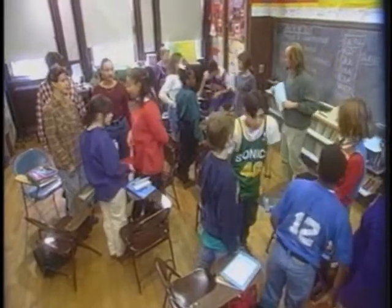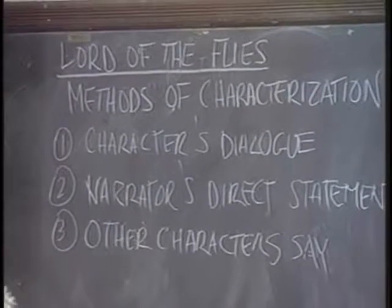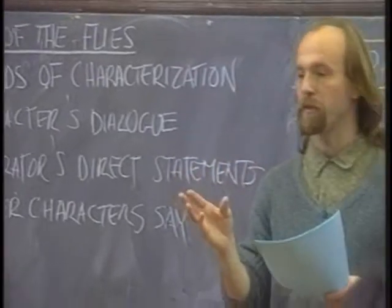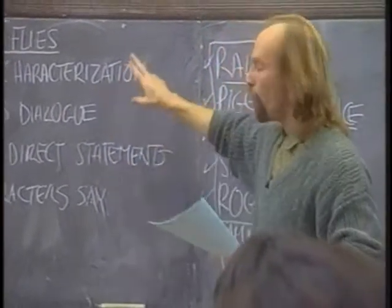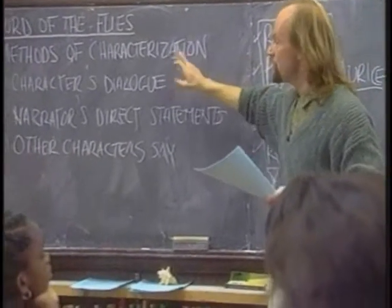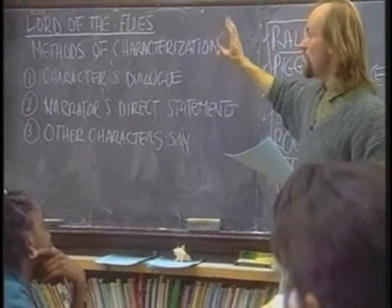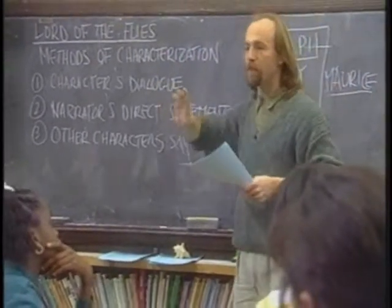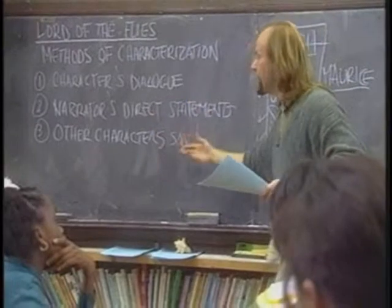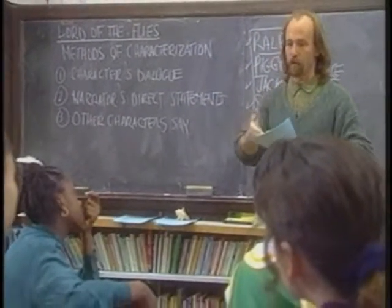Let's settle down, folks. Try, if possible, when you're finding passages from the novel that characterize your character, to get one of each of these types of characterization. Find a passage, if you can, where your character is saying something. Find a passage where the narrator is telling you something about your character. And finally, try and find a passage where other people in the story are talking about the person you have chosen. That's the first part of your task, and that's the individual part.